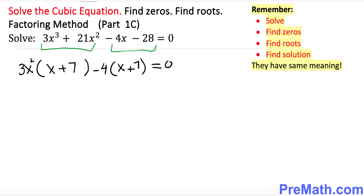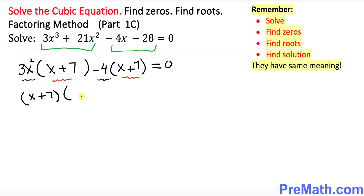Next, observe that x plus 7 and x plus 7 are the same. Factor them out and put x plus 7 here. Then inside the parentheses we have this part and this part: 3x squared minus 4, equal to zero.